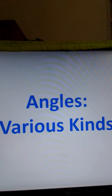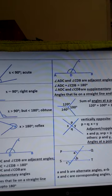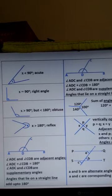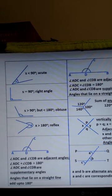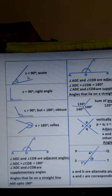The first topic we are learning about is different kinds of angles. The first angle, formed by two lines which intersect, is an acute angle. An acute angle is an angle which is less than 90 degrees.